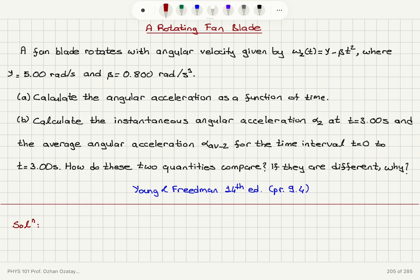Let's start with Part A. In rotational kinematics, we have equations that are completely analogous to translational kinematics. When we calculate the angular acceleration, it is the rate of change of angular speed: d omega z dt. So if we look at omega as a function of time, it is gamma minus beta t squared.